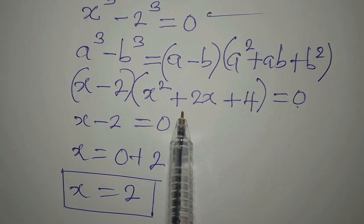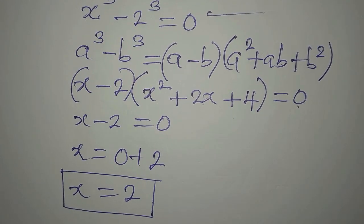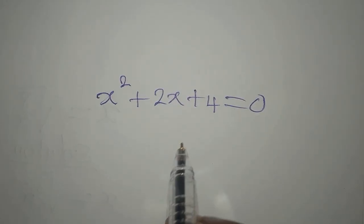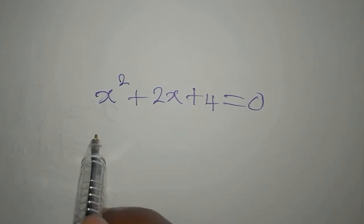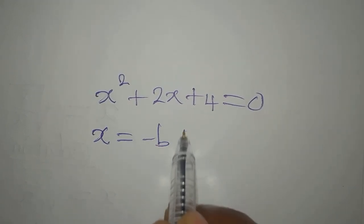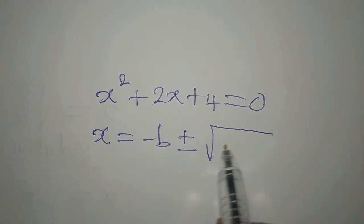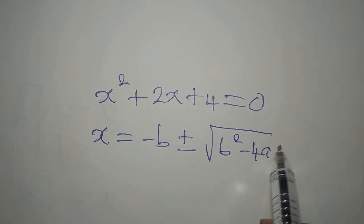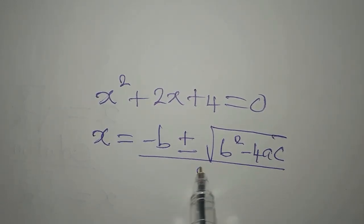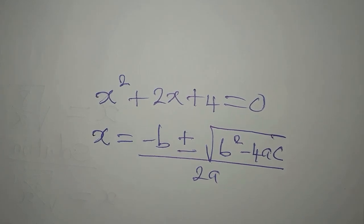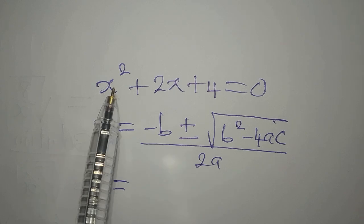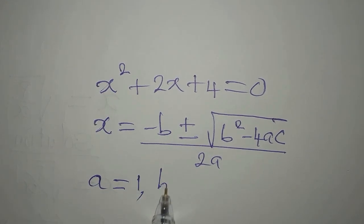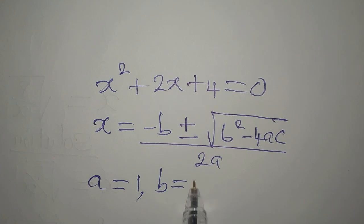x squared plus 2x plus 4 equals 0. This gives us a quadratic equation. Let's use the quadratic formula: x equals negative b plus or minus square root of b squared minus 4ac, all over 2a. We need to identify a, b, and c. Our a is the coefficient of x squared, which is 1. Our b is the coefficient of x, which is positive 2.